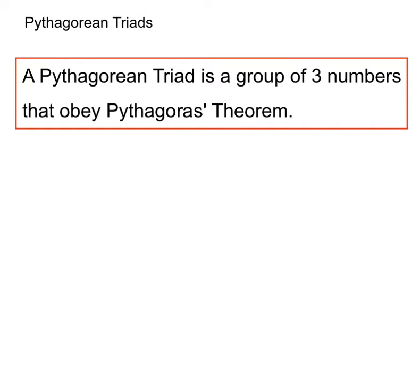Pythagorean triads. Now, what is a Pythagorean triad? It's a group of three numbers that obey Pythagoras' theorem. Any three numbers that work with Pythagoras.